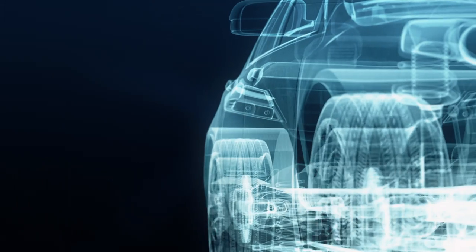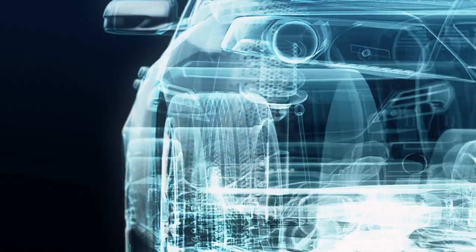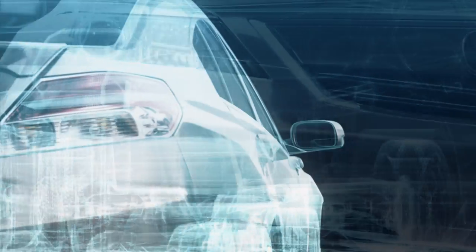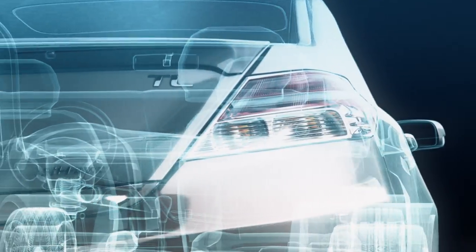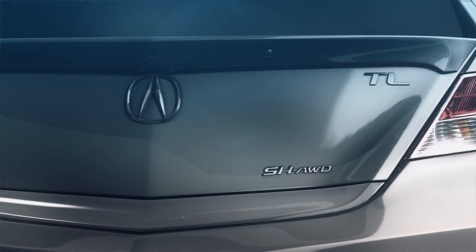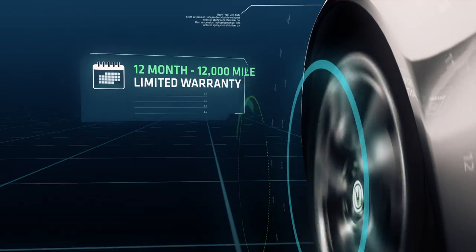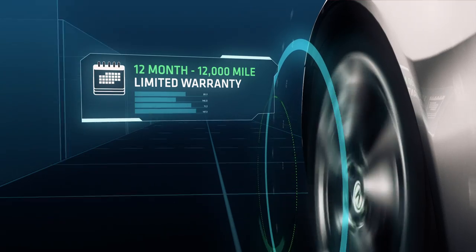It's all designed to bring the vehicle's mechanical condition and appearance up to the high standards set by Acura. This is why every Acura certified pre-owned vehicle comes with a 12-month, 12,000-mile limited warranty and a seven-year, 100,000-mile powertrain limited warranty.